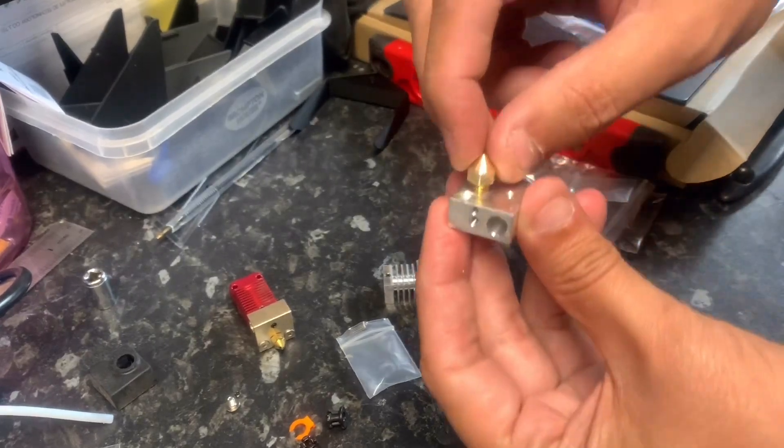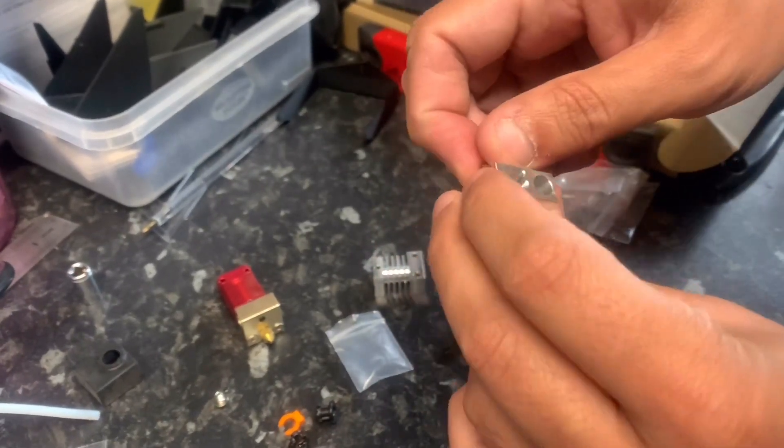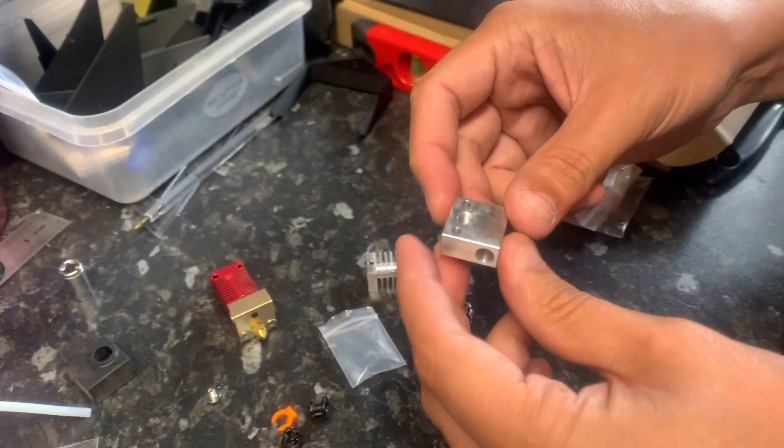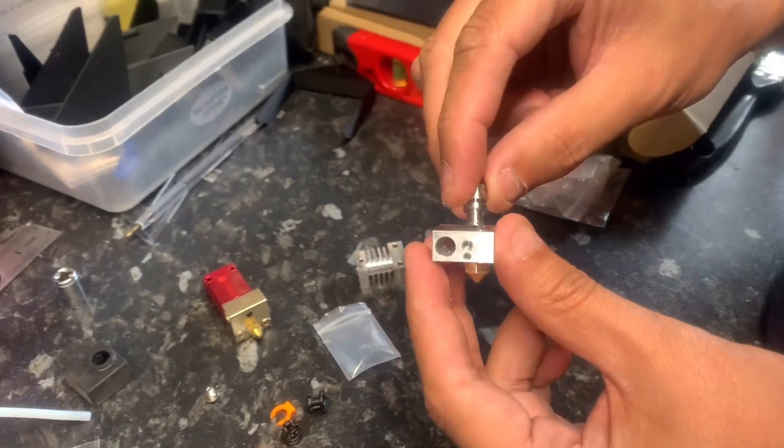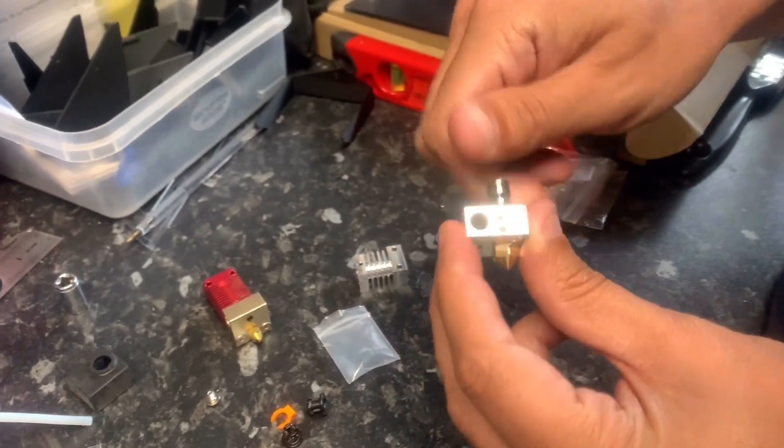So grab the nozzle and tighten it in. I'll just do it hand tight for now as we'll tighten it later. And then grab the middle bit. Finger tight that as well.